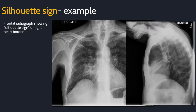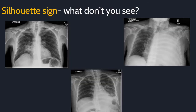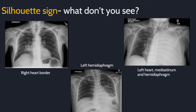The lateral radiograph confirms this with a wedge-shaped opacity. The patient also got a CT, which shows the pneumonia in another modality. Here are some examples. Remember, the name of the game is: what don't you see? The right heart border, left hemidiaphragm, left heart mediastinum, and left hemidiaphragm.